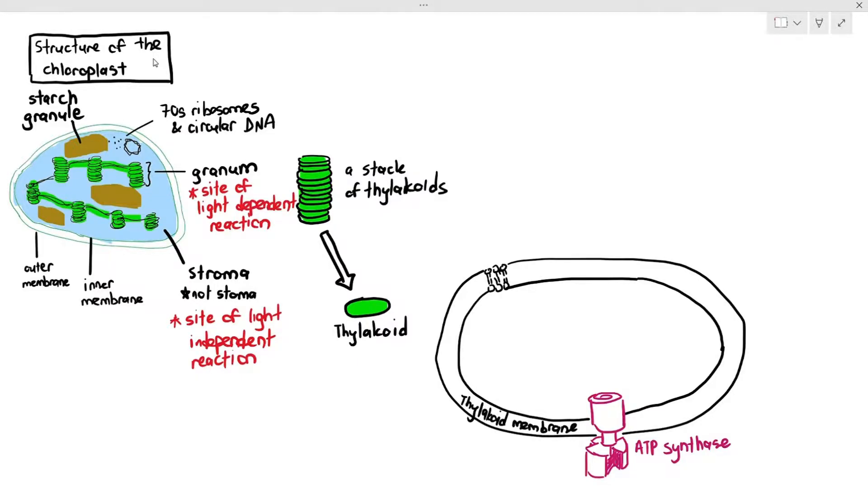So, the chloroplast has granum. The granum have thylakoid. And the thylakoid has its own ATP synthase to synthesize ATP. But this is not through respiration, by the way. Within the thylakoid membranes also, it has its own electron transport chain.